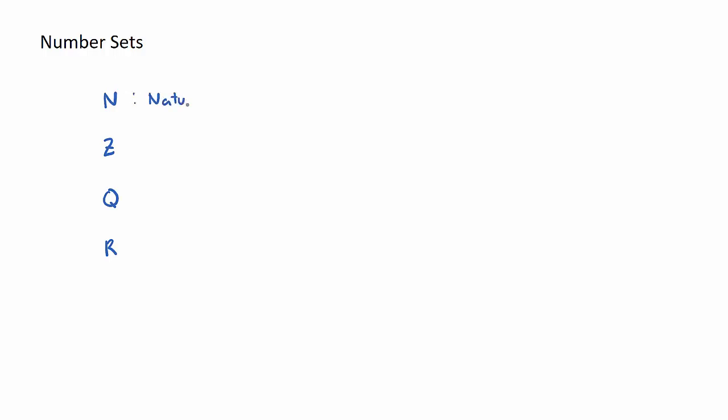N stands for natural numbers. Now these are the easiest. Natural numbers are just simply all positive integers starting from one. So all positive integers. Now an integer is just simply a whole number.